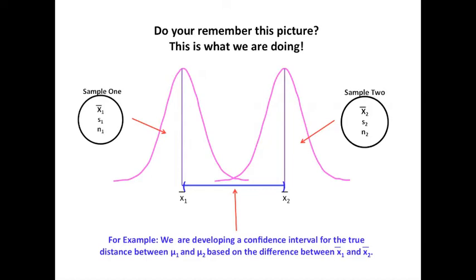Well, you remember this picture again, don't you? In this picture, we have two samples which we have taken, and each of these samples has a mean, a standard deviation, and a number in the sample. And what we're doing is looking at this distance between those sample means to construct a confidence interval for the difference between the population means, mean 1 and mean 2.